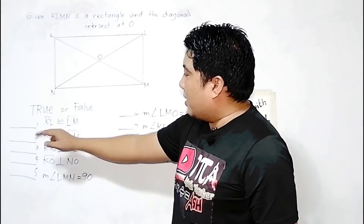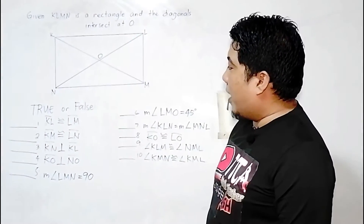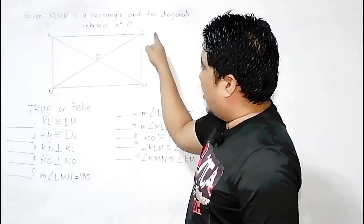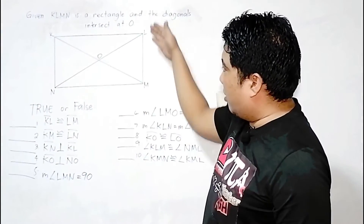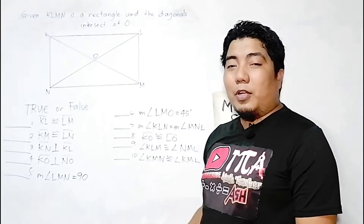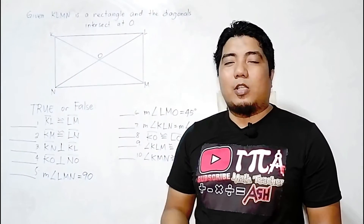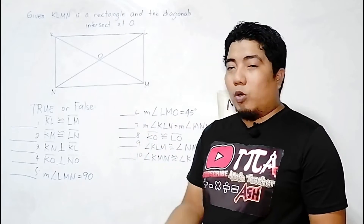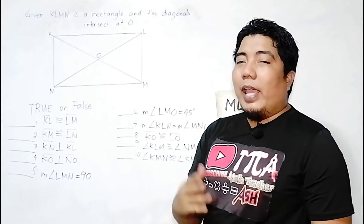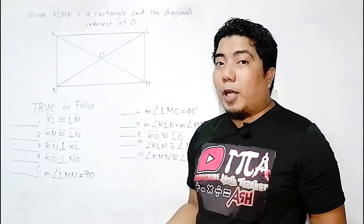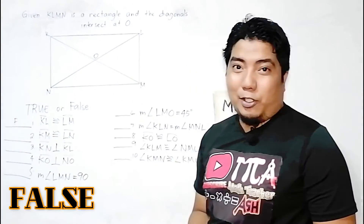Statement 1: Line segment KL is congruent to line segment LM. KL and LM are adjacent sides, not opposite sides. Remember, in parallelogram properties, opposite sides are congruent. However, KL and LM are not opposite sides, and that is not part of our properties. Therefore, this statement is false.